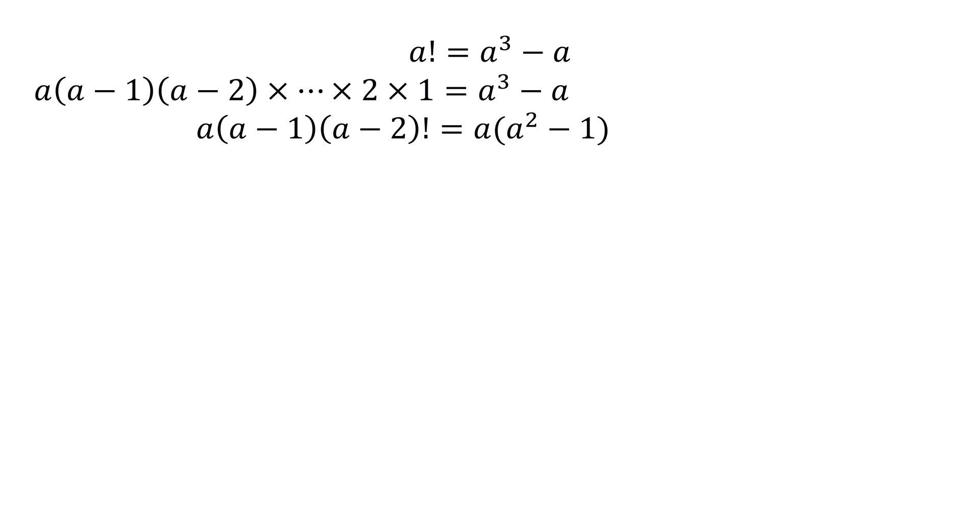So we have a times (a squared minus 1). Now we'll work on the right-hand side. a squared minus 1 is a difference of two squares because 1 is also a square. Difference of two squares can be written as (a minus 1) times (a plus 1).